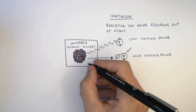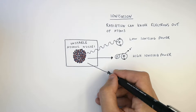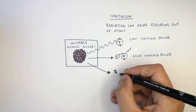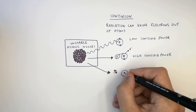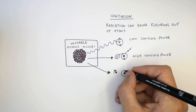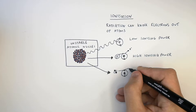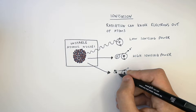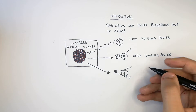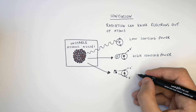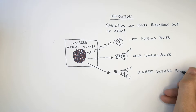The radiation with the highest ionizing power is the alpha particle. It is radiation that can knock electrons out of atoms more than gamma rays or beta particles can. Alpha particles have the highest ionizing power.